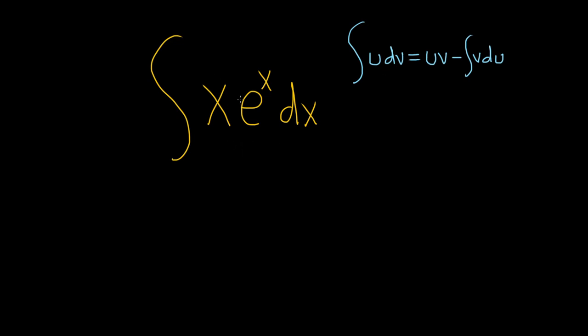So for example, in this case, if we let u be equal to e to the x, its derivative is e to the x. That is not simpler. So we're going to go with u equals x. So we'll let u equal x.